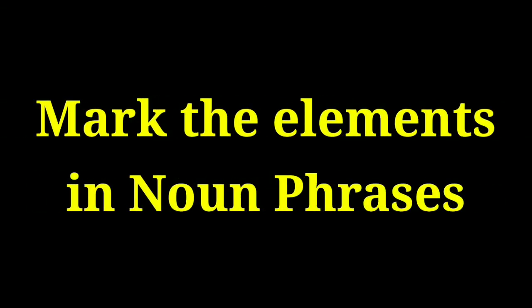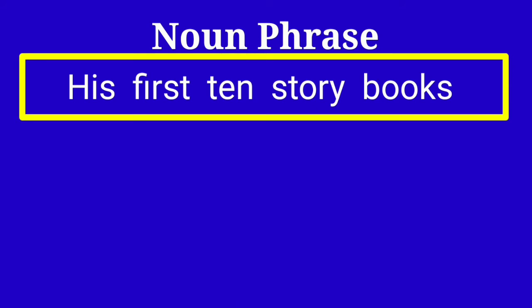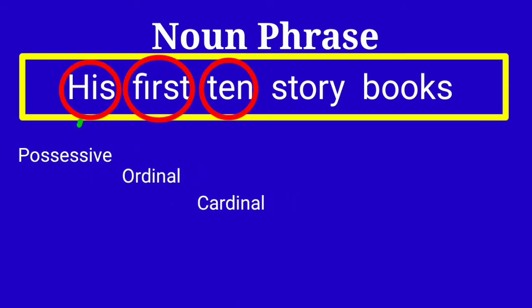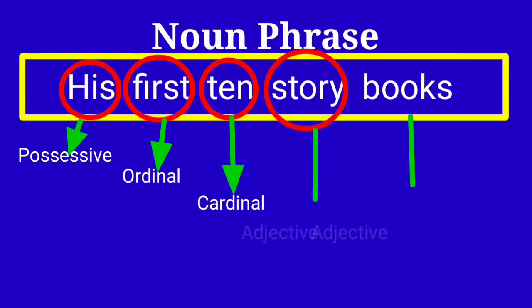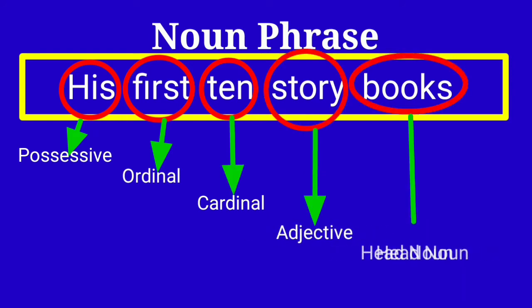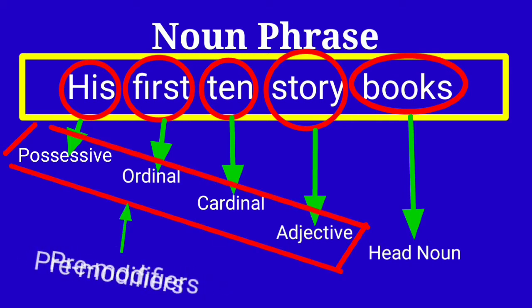Now look at the noun phrases and mark the elements in them. In 'his first ten story books': 'his' is a possessive, 'first' and 'ten' are numerals (ordinal and cardinal respectively), 'story' is a classifier (noun used as adjective), and 'books' is the head noun. All of 'his', 'first', 'ten', and 'story' are pre-modifiers.